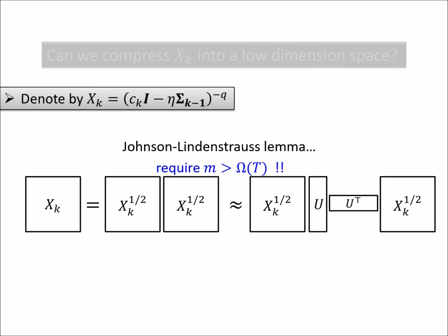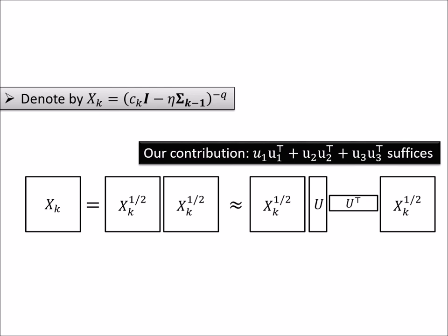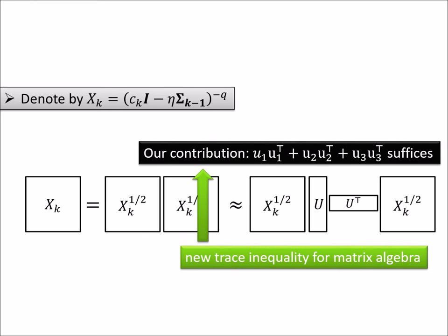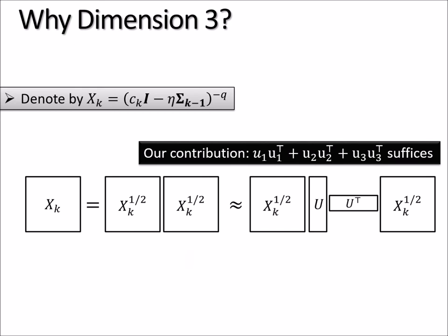Therefore, like, yes, you are compressing, but you are compressing to dimension T, which is not a good dimension. Therefore, in this paper, we completely avoided the use of random matrix theory, and we said, let's just compress to dimension 3. And we somehow showed that it suffices. So this is built upon a new trace equality that we discovered in this paper for non-commutative matrix algebra, which I don't think I have any time to talk about today. But instead, let me just show you why this magic number 3, why dimension 3.